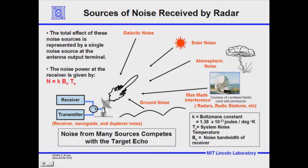What we do is characterize all these different noise sources by an effective temperature, multiply by Boltzmann's constant to get energy, then divide by time — specifically the pulse width — to get power. One over that time is the bandwidth (B sub N, in Hertz) over which the receiver is listening. So the effective power of the noise is Boltzmann's constant (in energy per degree Kelvin) times the temperature times the bandwidth, and we represent all noise sources by a single noise source at the output of the antenna terminal.